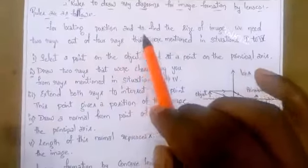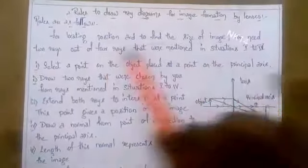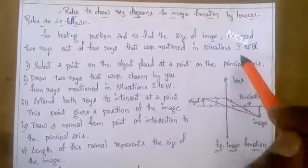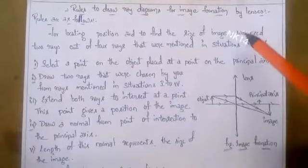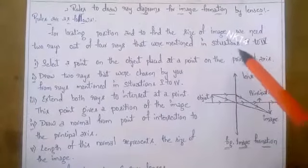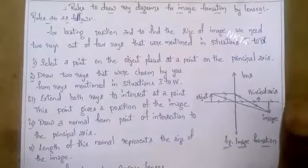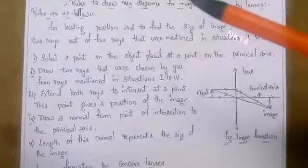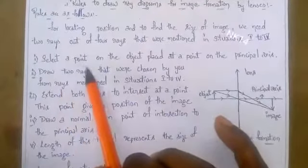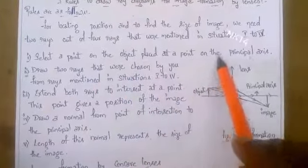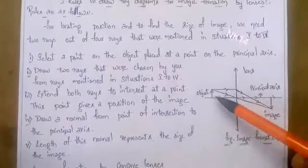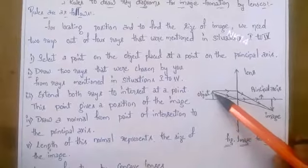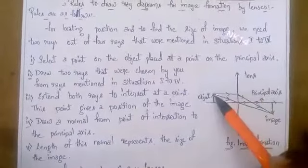For locating the position and to find the size of an image, we need two rays out of four rays mentioned in situations one to four, which I already explained in my previous video. Among the four situations, we will take two rays that will help make out the image formation. The first point is to select a point on the object placed on the principal axis. I have taken an object placed on the principal axis and on the object I have to choose one point — I have chosen the top.